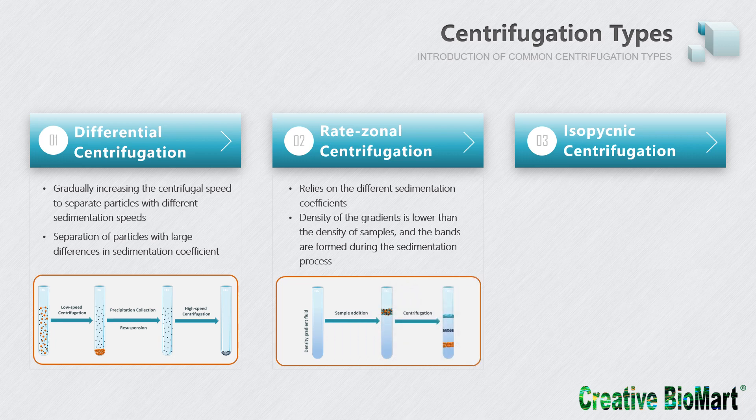Rate-zonal centrifugation also relies on differences in sedimentation coefficients of particles, but the requirement for difference among particles is lower than for differential centrifugation. Under a certain centrifugal force, particles with different sedimentation coefficients settle at different speeds in the density gradient solution, forming bands at different positions in the gradient. For rate-zonal centrifugation, the maximum density of the gradient is generally lower than the density of the sample, so bands form during the sedimentation process. If centrifugation time is too long, all particles will settle to the bottom, so controlling centrifugal time is very important.